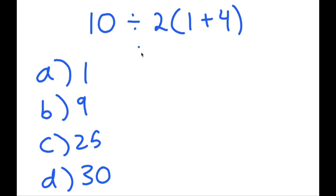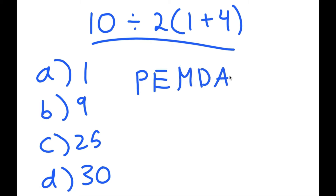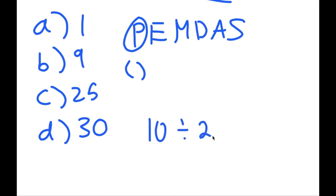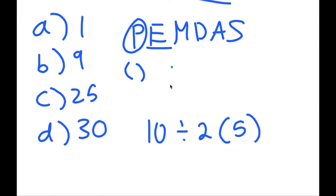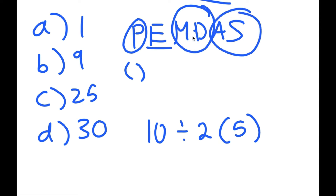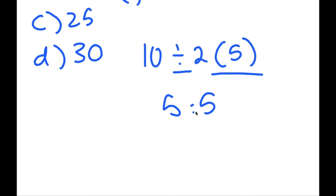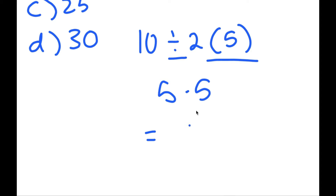To solve this, we use order of operations — PEMDAS. We go left to right. First, parentheses: we solve 1 plus 4, which is 5. So we have 10 divided by 2 times 5. No exponents, so we move to multiplication and division. These are grouped, and we do whichever comes first from left to right. Division comes first: 10 divided by 2 is 5. Now we have 5 times 5, and the only thing left is multiplication.